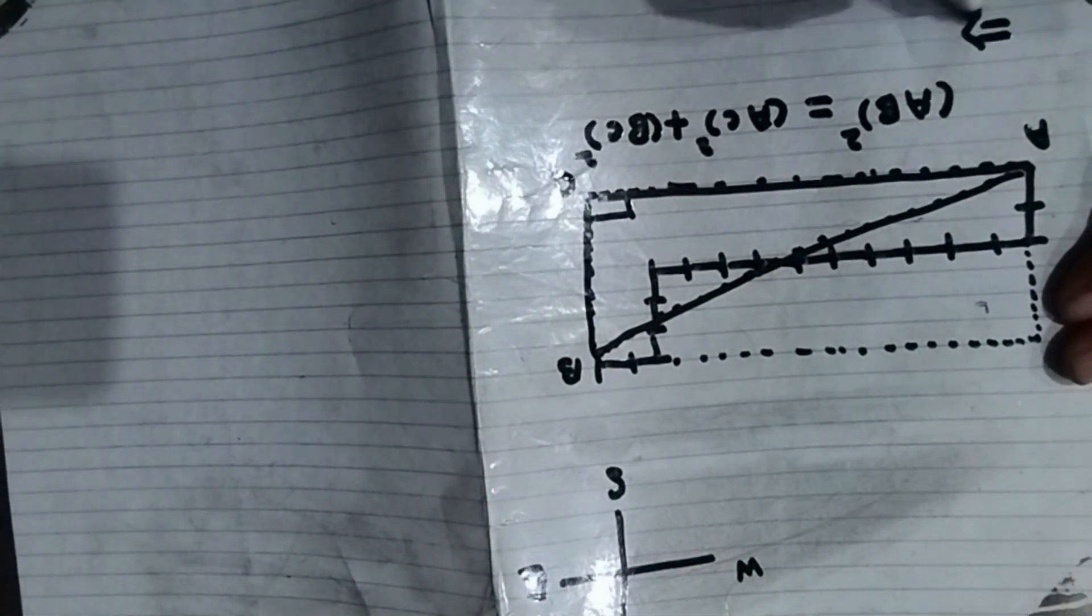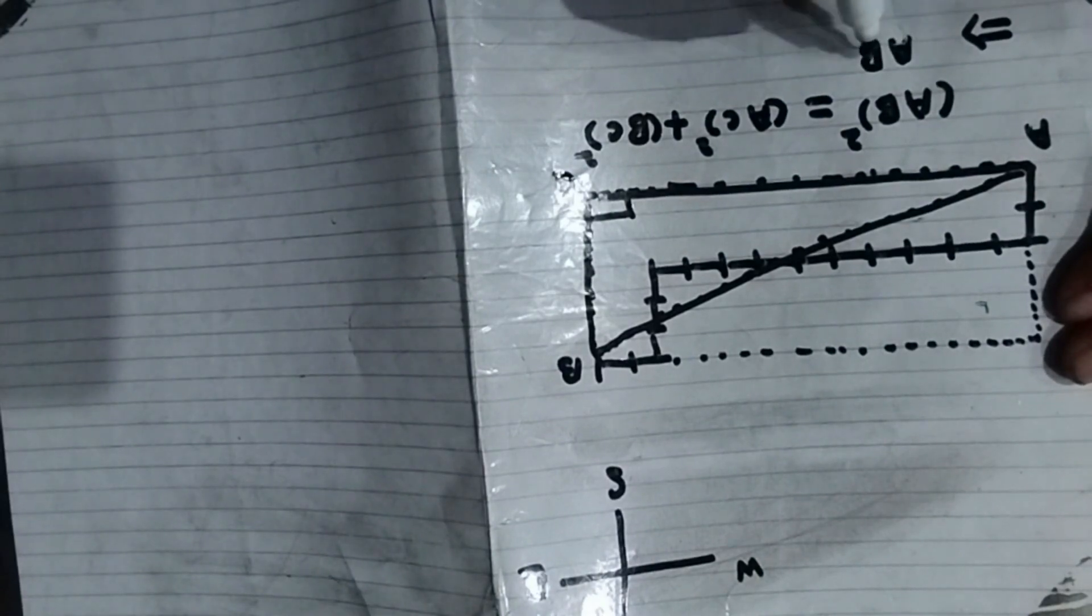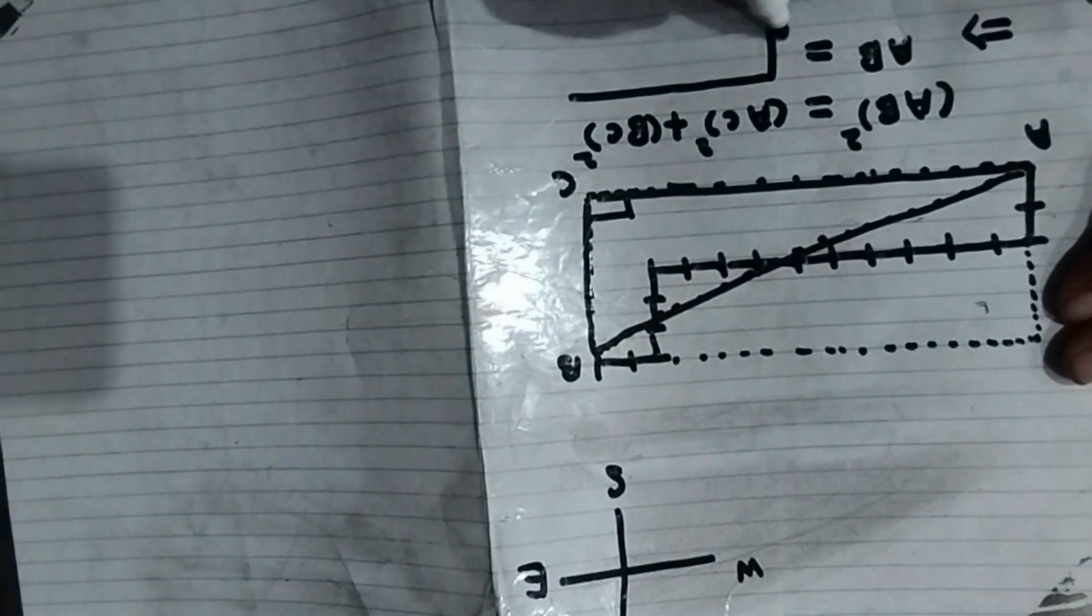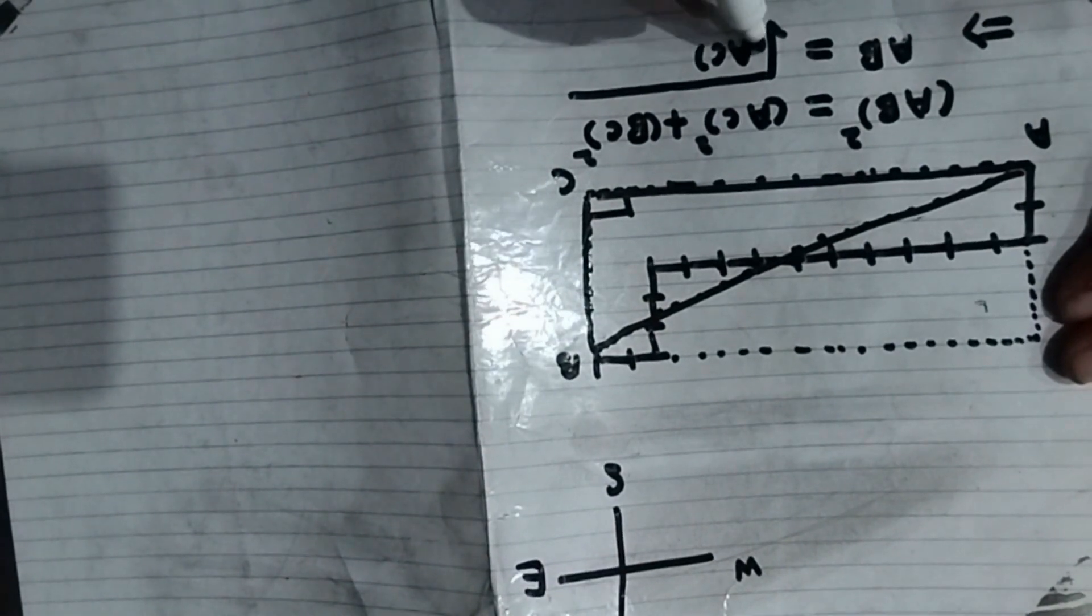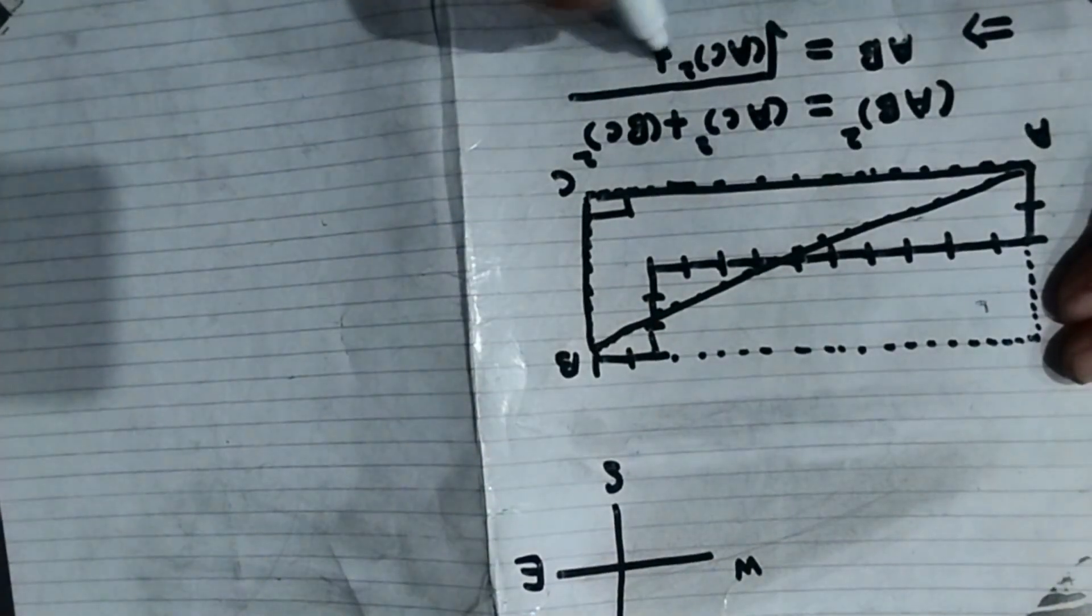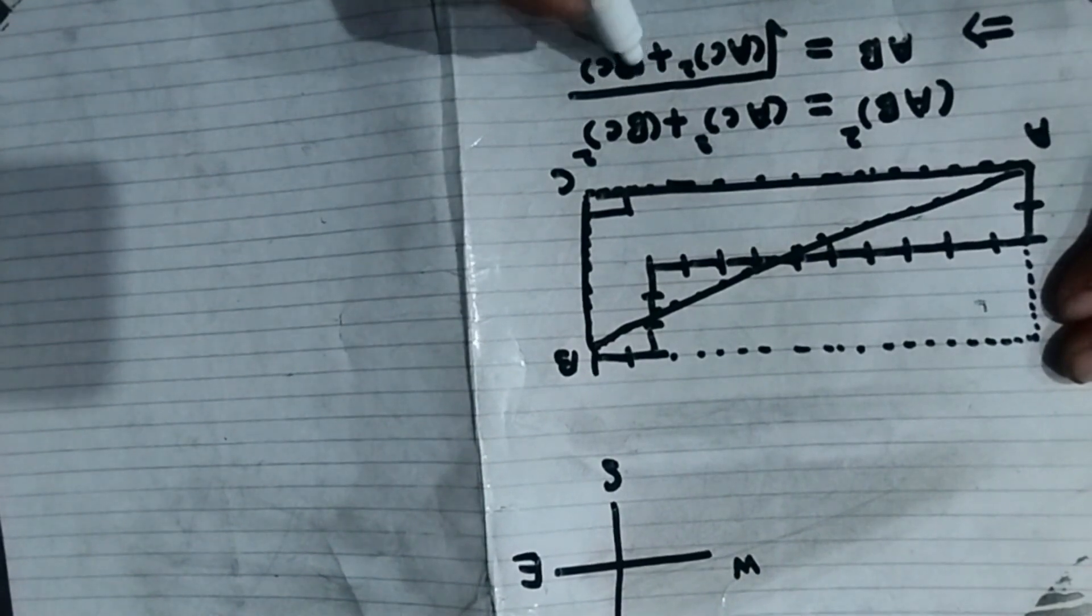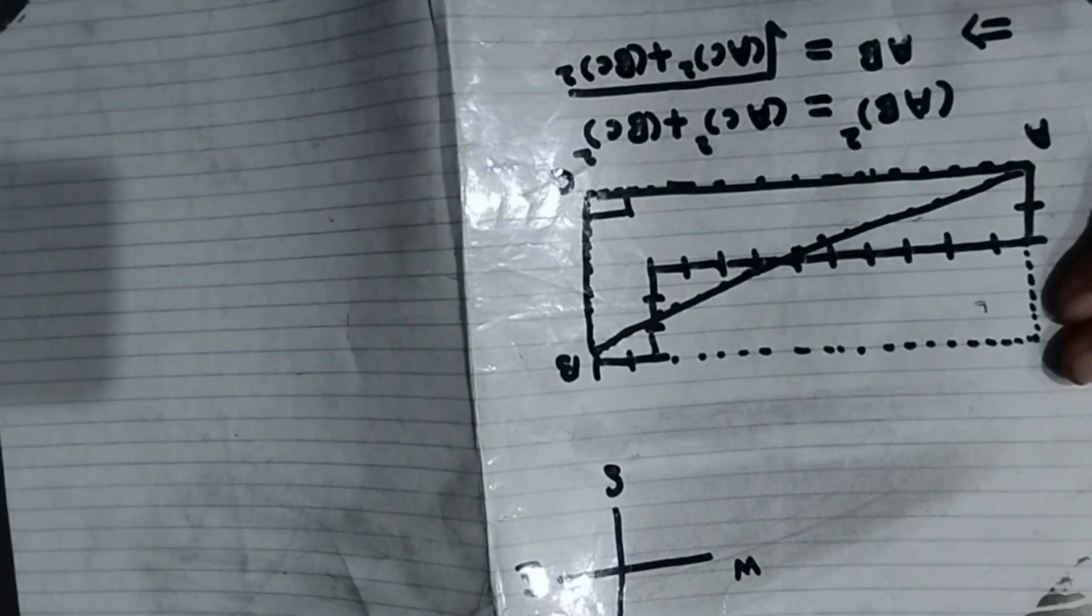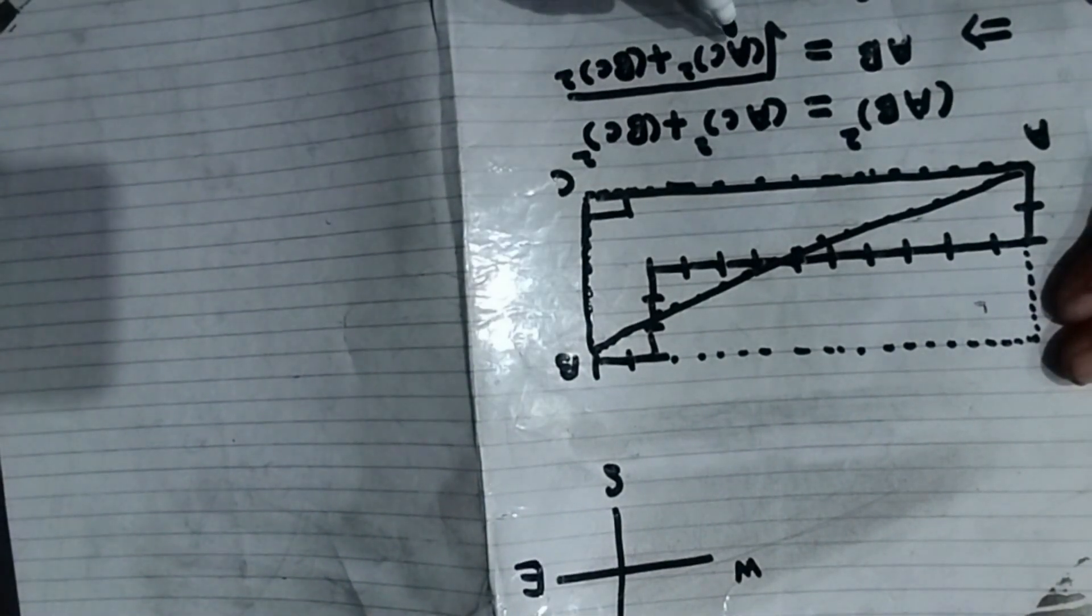From there we get AB equal to the square root of AC square plus BC square. Now we can calculate AB if we can find the values of AC and BC.